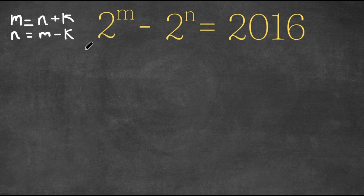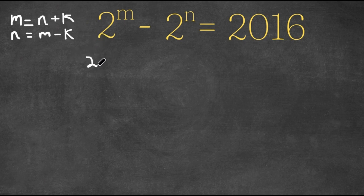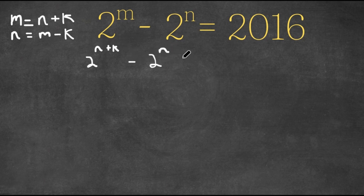So now what I'm going to do is I'm going to replace m with n plus k. So I'm going to rewrite this as 2 to the power of n plus k, minus 2 to the power of n, equals 2016.